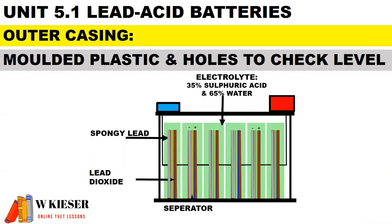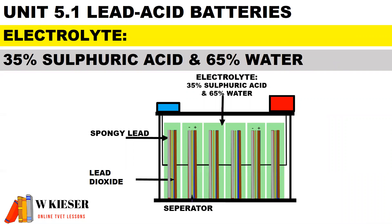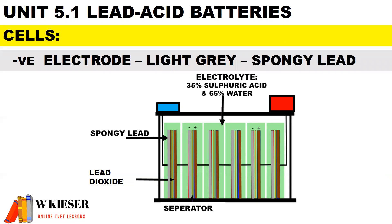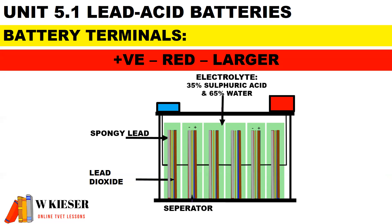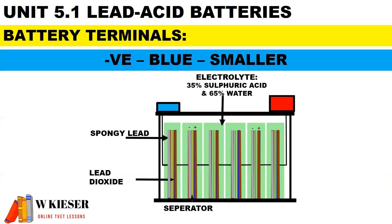The outer casing is molded plastic and there are holes to check the electrolyte level. The electrolyte, when fully charged, consists of 35 percent sulfuric acid and 65 percent water. The negative electrode is light gray in color and is made of spongy lead. The positive electrode is dark brown in color and is made of lead dioxide. The positive terminal is red and larger, and the negative terminal is blue and smaller.